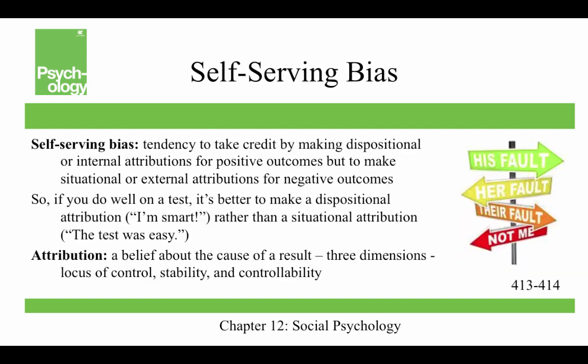A self-serving bias is a tendency to take credit by making a dispositional or internal attribution for positive outcomes, but to make situational or external attributions for negative outcomes. So if you do well on a test, it's better to make a dispositional attribution — that you're smart — rather than a situational attribution, like saying the test was easy. And if you do badly, you should make a situational attribution: that was a really hard test, and not a dispositional attribution that you're not smart.